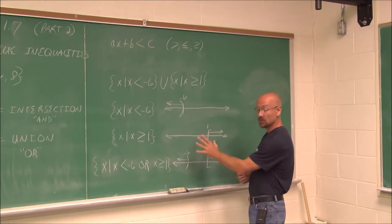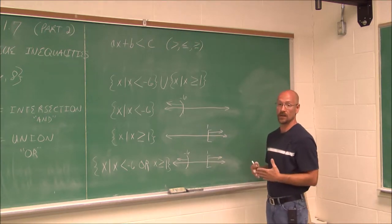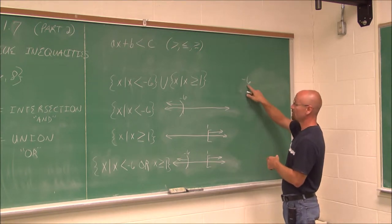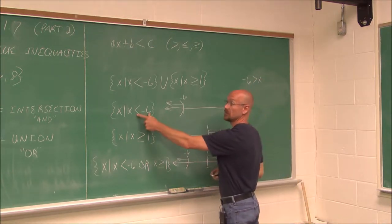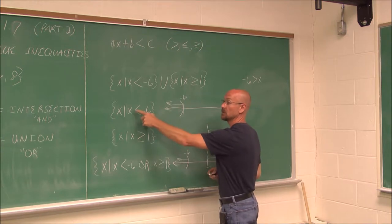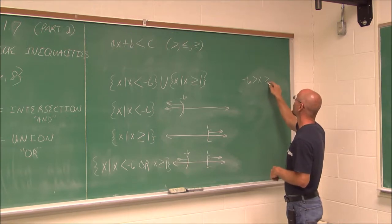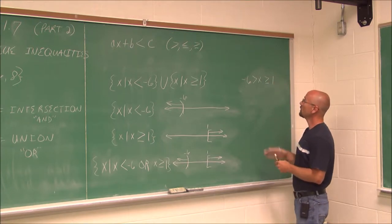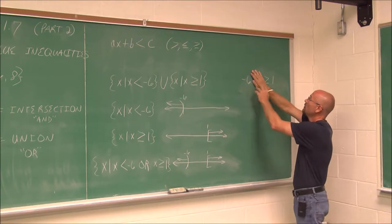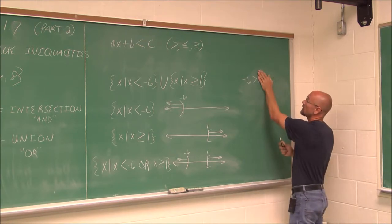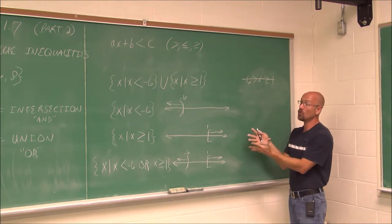Looking at the solutions for what solves this OR this — we could not write it as a double inequality. If we tried: negative 6 is greater than x (because x is less than negative 6), and x is greater than or equal to 1. If we cover up any piece of it, this says negative 6 is greater than or equal to positive 1. A negative value is never greater than 1 — that's not true. So a double inequality would not work for a union; it never works for a union.